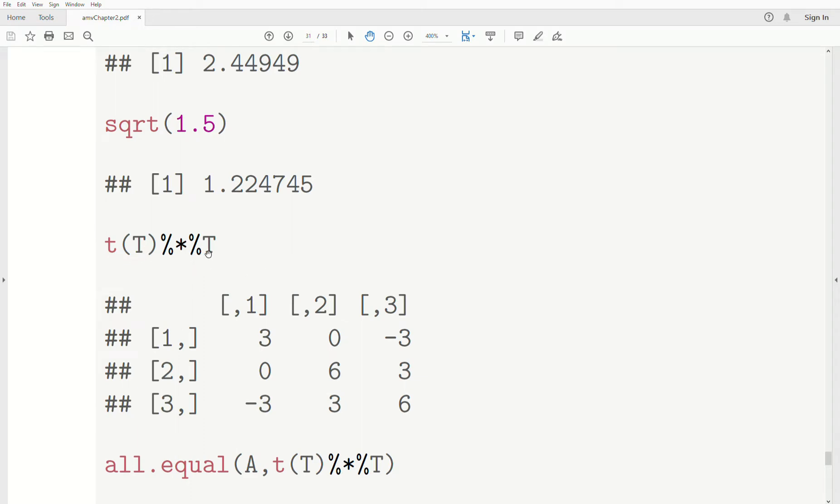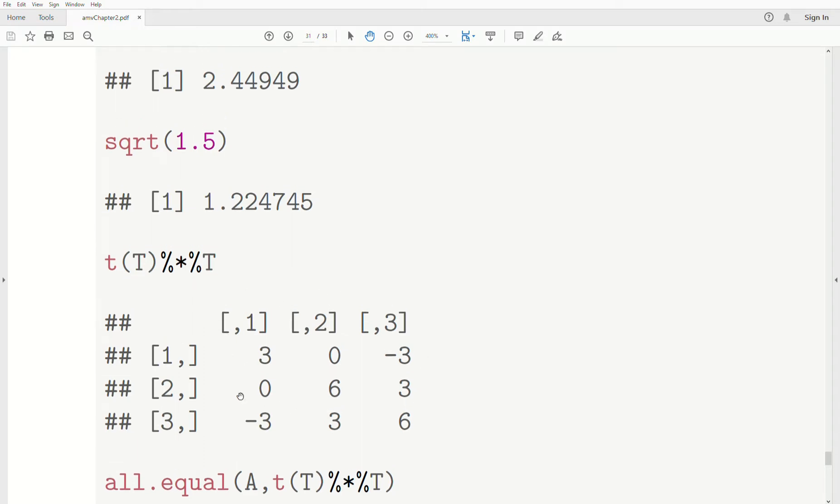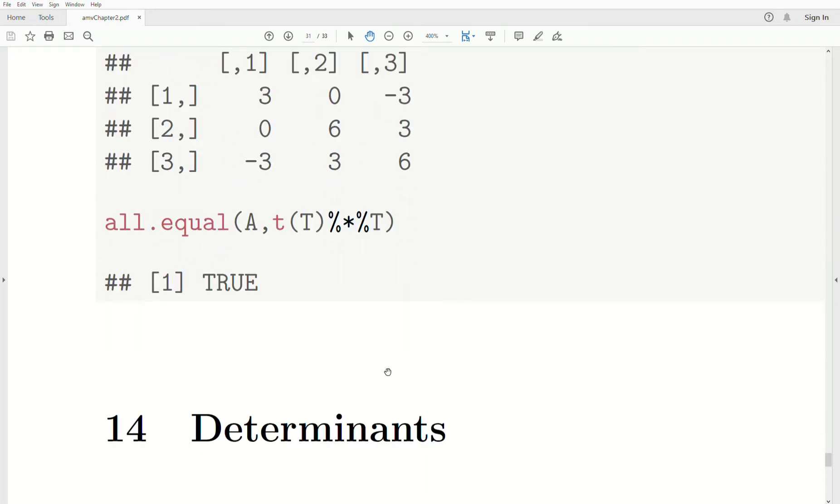So if we take T^T*T, we get our original matrix back. And if we take A and to do this with the all.equal function, does A equal T^T*T? And the answer is yes.